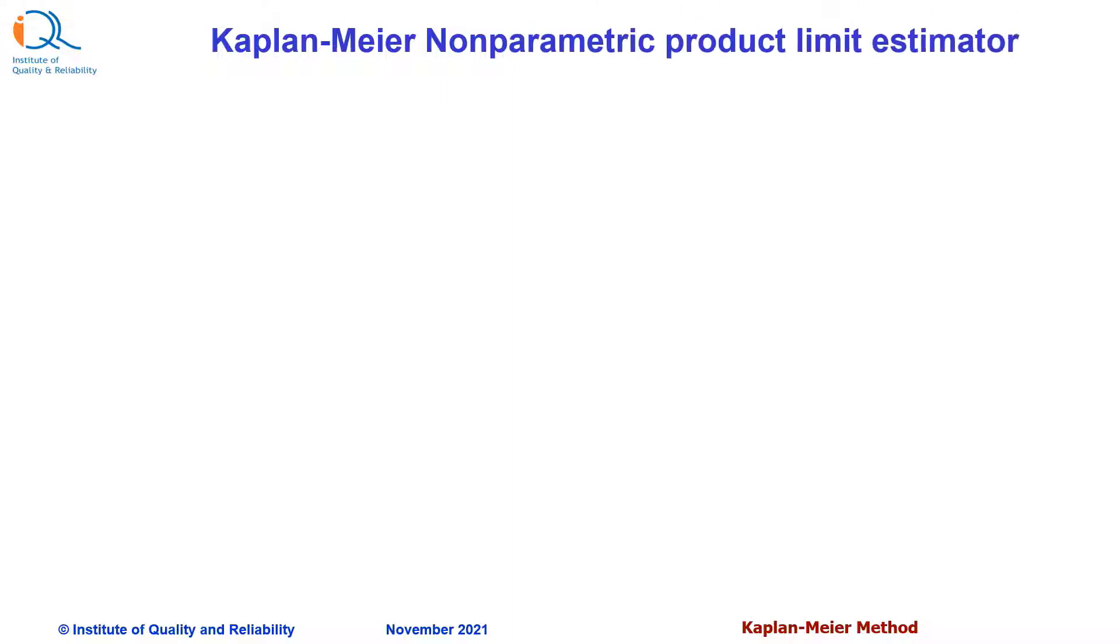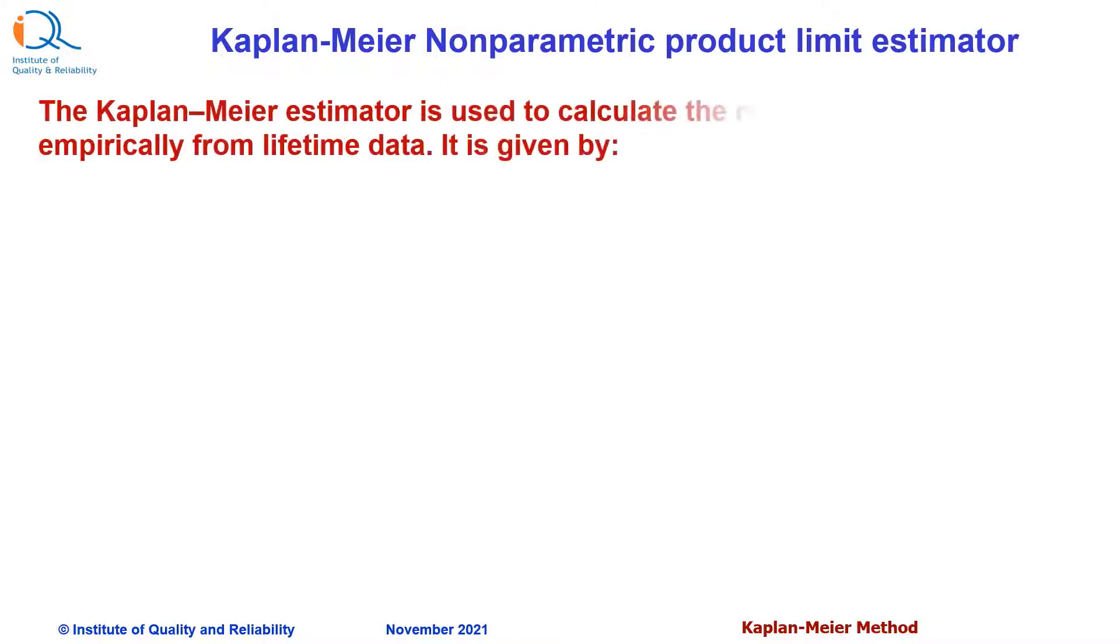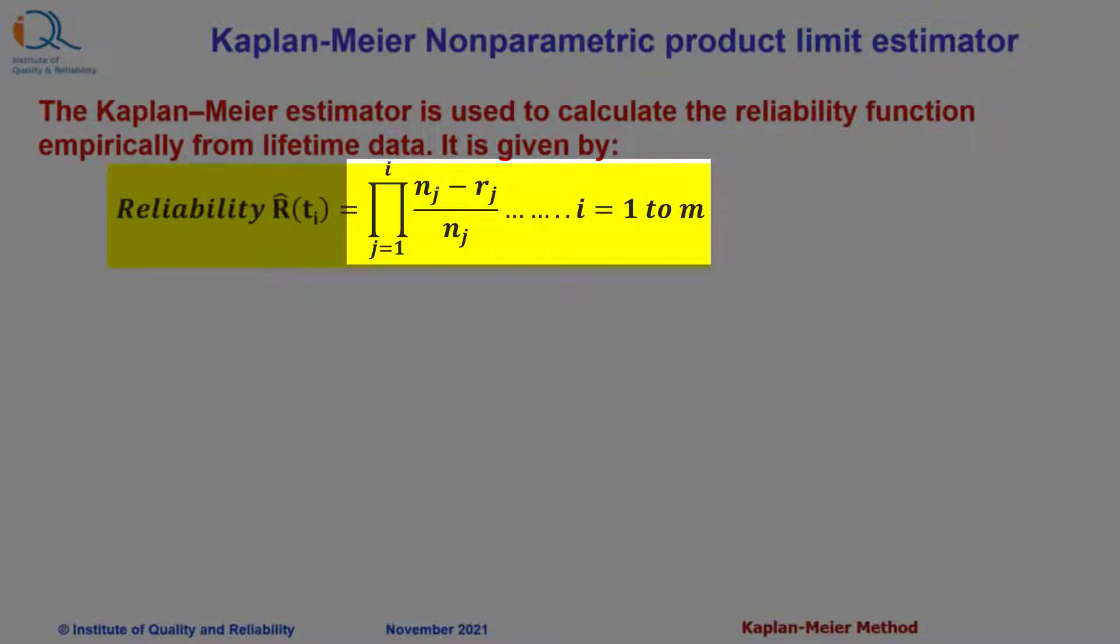Let us see how to perform calculations of Kaplan-Meier Product Limit Estimator. The Kaplan-Meier Estimator is used to calculate reliability function empirically from lifetime data. It is given by this formula that is multiplication of this function nj minus rj upon nj, j equals 1 to i.